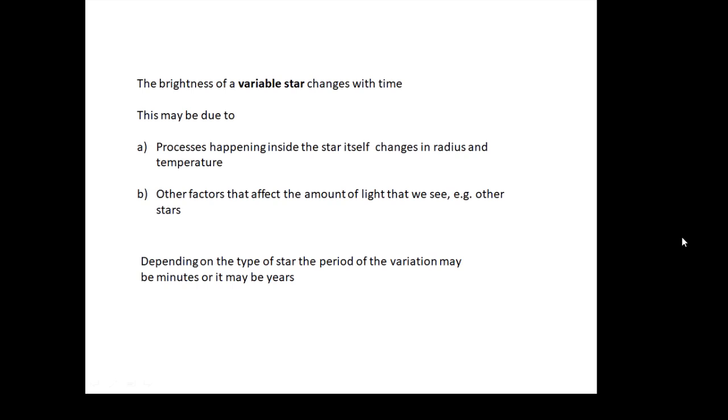All stars change brightness a little bit with time, but a variable star changes significantly. There are two main reasons why this could happen. It could be things happening inside the star itself, which may change its radius,